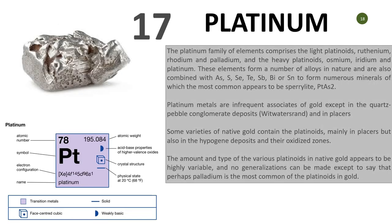Number seventeen is platinum. The platinum family of elements comprises the light platinoids — ruthenium, rhodium, palladium — and the heavy platinoids. You need to look out for the platinum group elements. The platinum metals are a frequent associate of gold, except in Witwatersrand conglomerate deposits such as those in South Africa. Some varieties of native gold actually contain platinoids, mainly in placer deposits but also in epithermal deposits and the oxidized zone.